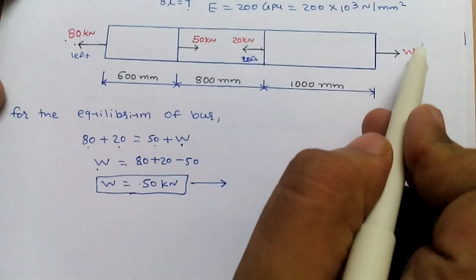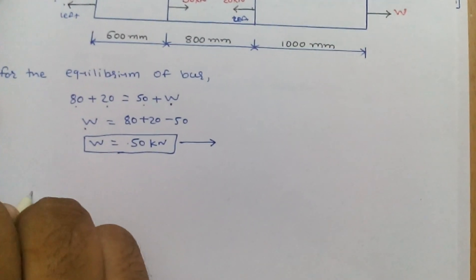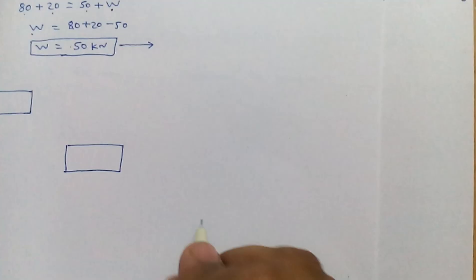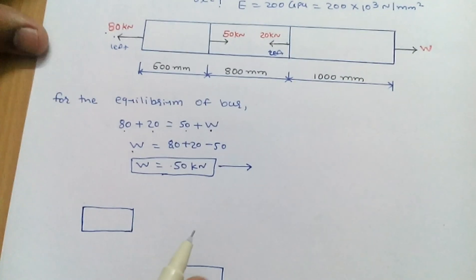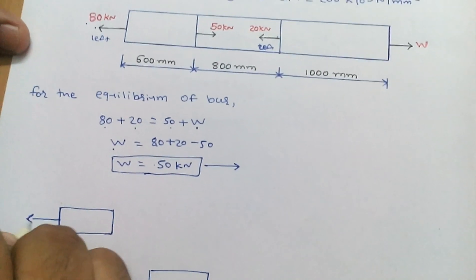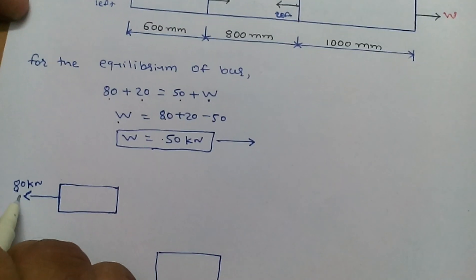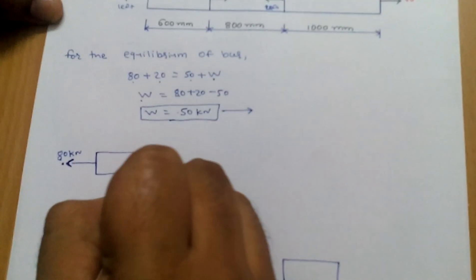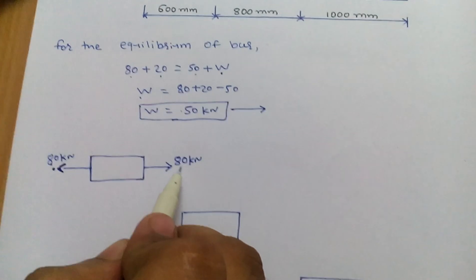And if the answer here came out negative, we would change its direction. Now in the second step, we check how many blocks are given — three blocks are given. So we take the three blocks individually as 1st block, 2nd block, and 3rd block. In the 1st block, an 80 kN force is applied. To maintain the system in equilibrium, an equal and opposite force of 80 kN is required, so 80 kN is applied in the opposite direction.